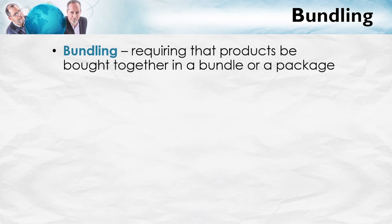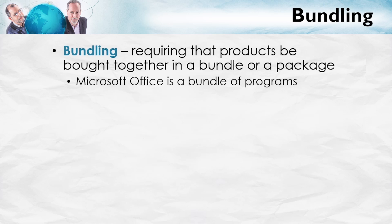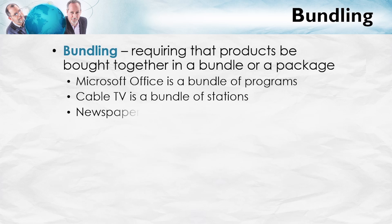We have a whole other talk on bundling, so I'll cover it briefly here just to note the difference between bundling and tying. Bundling requires that products are bought together in a bundle or package. Microsoft Office is a bundle of programs — you buy Word, Excel, PowerPoint all together. Cable TV is a bundle of stations; you buy a package and get everything in it. The newspaper is a bundle of sections — you get the sports page and the business section even if you read only the business section.